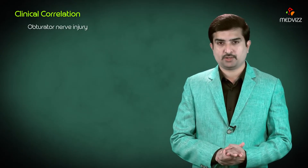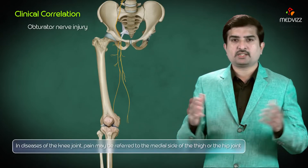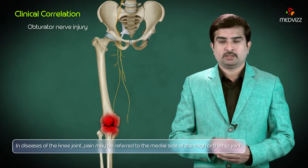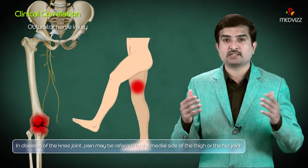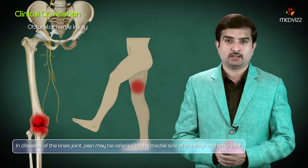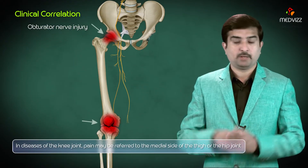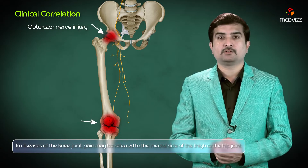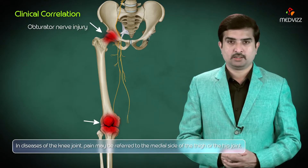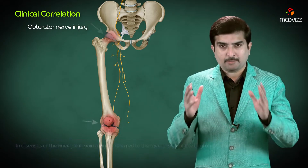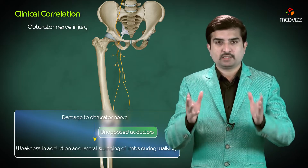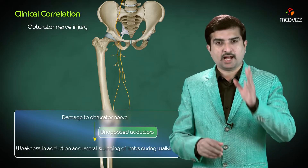Obturator nerve injury: in diseases of the knee joint, pain may be referred to the medial side of the thigh or the hip joint, because the obturator nerve supplies both joints. Damage to the obturator nerve causes weakness in adduction and lateral swinging of the limbs during walking due to unopposed adductors.